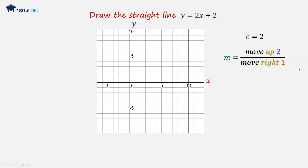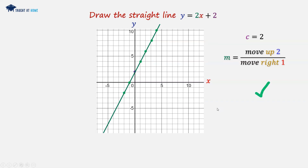We're going to place our first point at x equals 0 and y equals 2. And from there, we're going to move up 2 and move to the right 1, repeating this until we've got a sufficient amount of points. We can even go in the other direction, and then we can join these up with a straight line. And that is how we do that one.